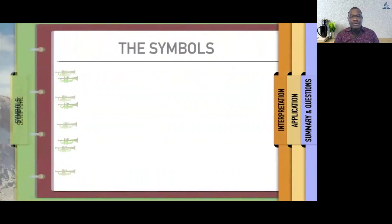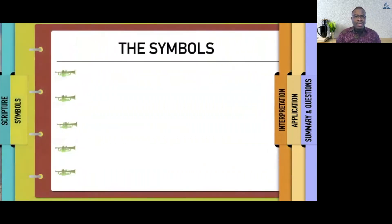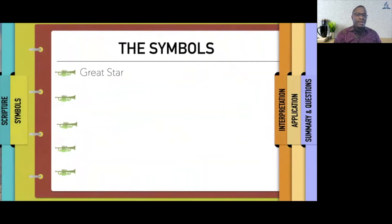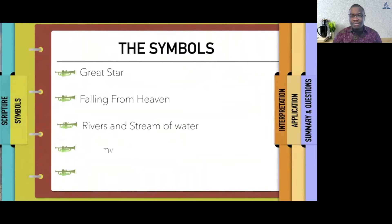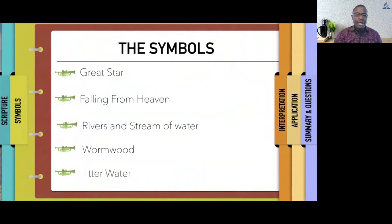The symbols that we are going to look out for are the following: the great star, the action of falling from heaven, rivers and streams of water, Wormwood, and bitter waters.